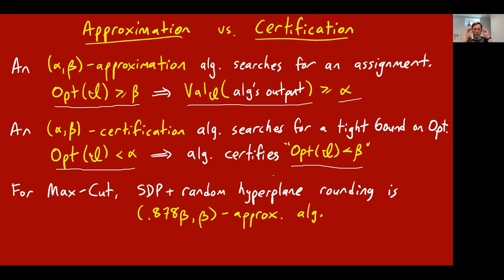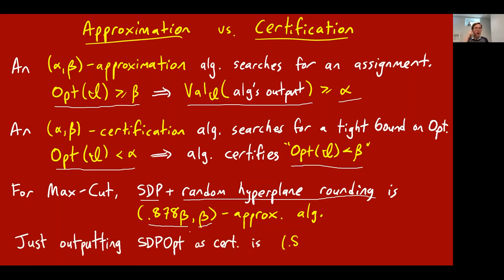To clarify the difference for max cut: the Goemans-Williamson algorithm — solve the SDP, get vectors, do random hyperplane rounding to produce an actual cut — that's an approximation algorithm. It finds a good solution: whenever the optimum cut is beta, it guarantees a solution of at least 0.878 beta. On the other hand, a lesser thing you could do is just solve the SDP. If you didn't figure out the hyperplane rounding, you could just write down the SDP as a relaxation, so the SDP optimum is an upper bound on the true optimum. Just solving the SDP and outputting its value is a certification algorithm.